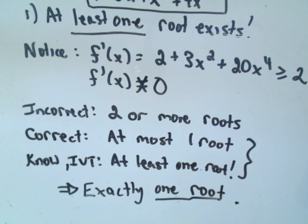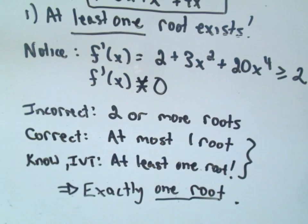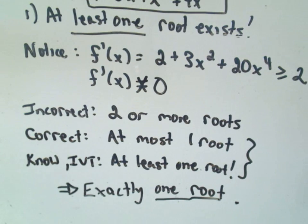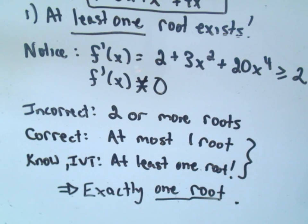If it's incorrect to say two or more roots exist, then there's at most one root. But we already showed using the Intermediate Value Theorem that there's at least one root. Those two statements together — at least one root and at most one root — mean there's exactly one root. So we've used a proof by contradiction to justify that this polynomial has exactly one root. Make sure you understand the Mean Value Theorem and the Intermediate Value Theorem. You may need to watch this two, three, or even twenty times before the idea sinks in.